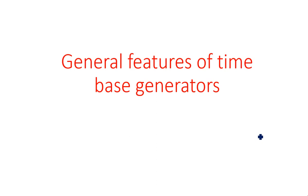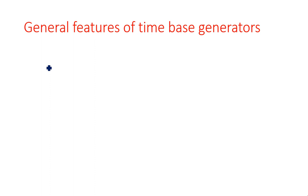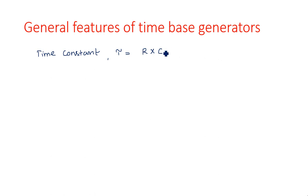In this video, you are going to learn about the introduction of time-based generators and their general features. A time-based generator generates a signal waveform depending on a certain time period, which is prefixed based on capacitor and resistor values. The concept of time constant is central here — the time constant tau is equal to the product of resistance and capacitance in that particular path.